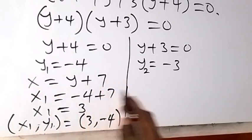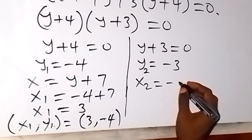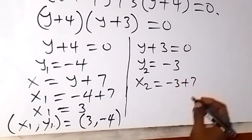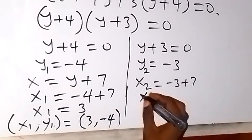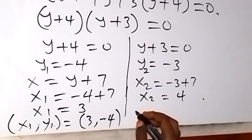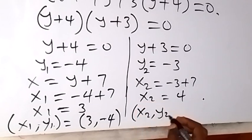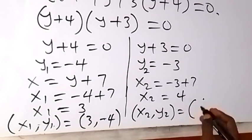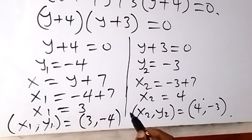Let's get the second value of x as well using x equals y plus 7. We have x2 will give us y, which is minus 3, then plus 7. Minus 3 plus 7, same thing as 7 minus 3, that is 4. That means x2 equals 4. So the second set of solution, x2 comma y2, is 4 comma minus 3. The first one being 3 comma minus 4, and the second one being 4 comma minus 3.